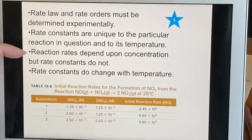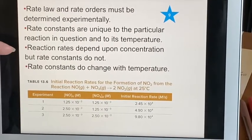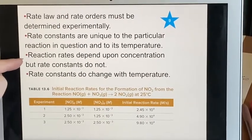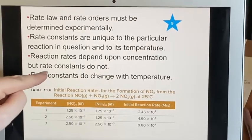Temperature supplies energy that might change how fast something is happening. If there's more energy there, it might speed things up. Reaction rates depend on concentration, but rate constants don't.